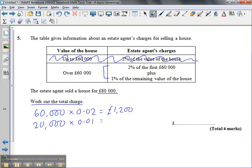So we realize the total charge, the total the estate agent is going to get, is 1,200 pounds for the first 60,000 pounds worth of house, and on the next 20,000 pounds he gets 1%, which is 200 pounds.